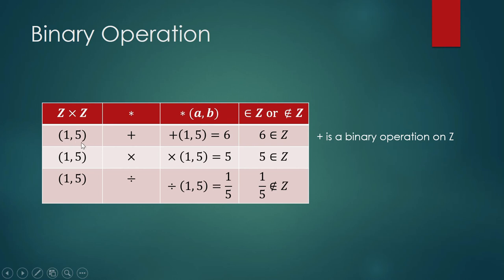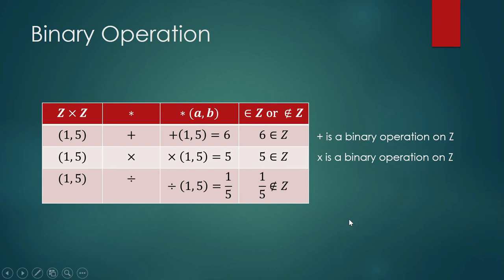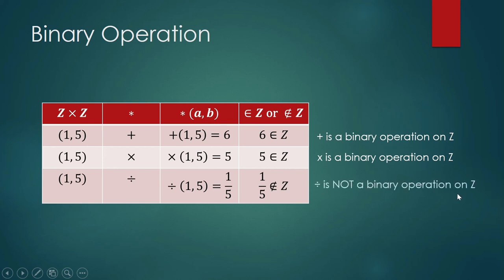You can choose any element from Z cross Z. When you apply addition, the result is always an integer, so addition is a binary operation on the set of integers. The same with multiplication — the product of any two integers is still an integer. However, division is not always an integer; for example, 1 divided by 5 is not an integer, so division is not a binary operation on Z.